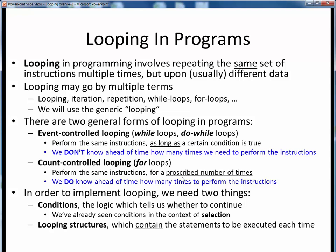Just as for selection, in order to implement looping, we need two things. First, we need conditions, which express the logic that tells us whether or not to continue looping. And, similar to selection, we need the various looping structures, which provide us the framework for the statements which are to be executed over and over again.